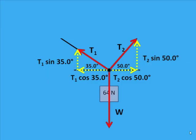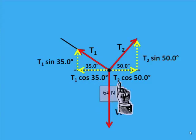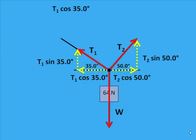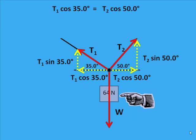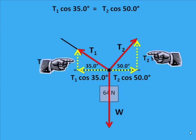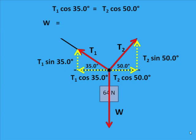Now we set up the equations. Every force up equals every force down. To the left and to the right: T1 cosine 35 equals T2 cosine 50. There isn't anything else acting to the left or to the right, so we set those two equal. Acting down is the weight — only the weight. Acting up, we have T2 sine 50 and T1 sine 35. Therefore, the weight equals T1 sine 35 plus T2 sine 50.